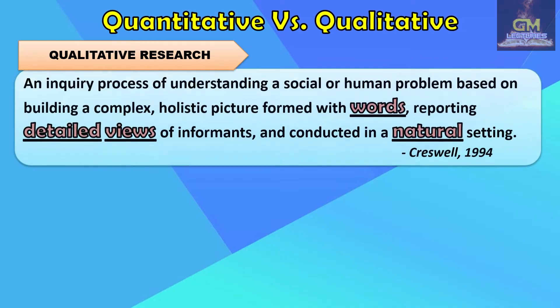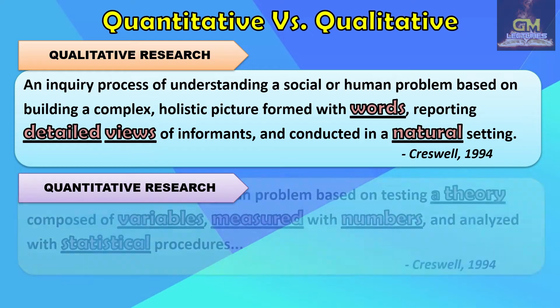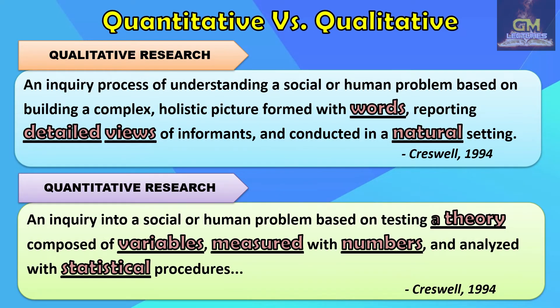Qualitative research, according to Cresswell in 1994, is an inquiry process of understanding a social or human problem based on building a complex, holistic picture formed with words, reporting detailed views of informants, and conducted in a natural setting. Whereas quantitative research is seen as an inquiry into a social or human problem based on testing a theory composed of variables, measured with numbers, and analyzed with statistical procedures.